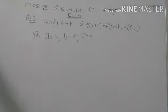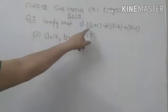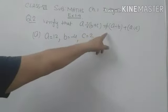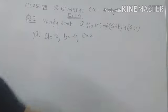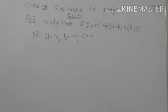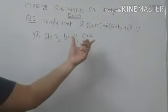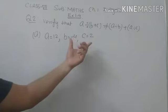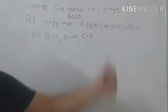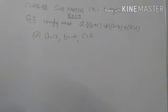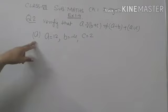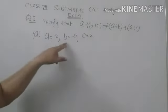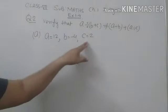In this question, we have to verify the given statement: A divided by (B plus C) is not equal to A divided by B plus A divided by C. We have to prove that this statement is true — meaning this side is not equal to this side; this result is not true. The values given are: A equal to 12, B equal to minus 4, and C equal to 2.